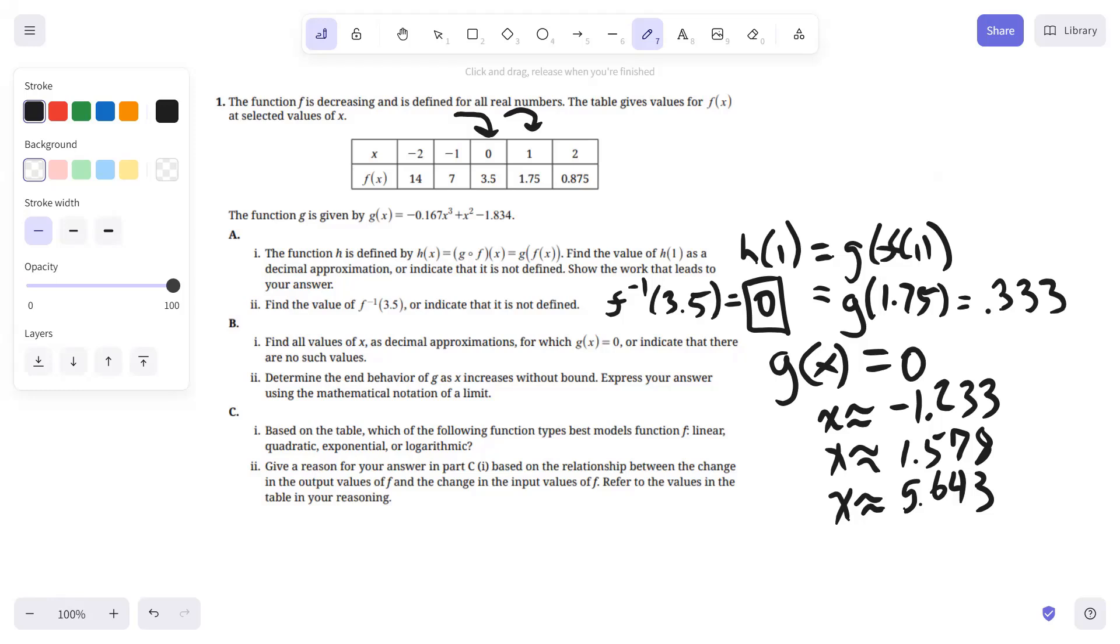Express your answer using mathematical notation of a limit. This would be just the limit as X approaches infinity of G of X, and we would say negative infinity. Because the function's cubic and the leading coefficient is negative, we know it's going to decrease without bound as X increases without bound.